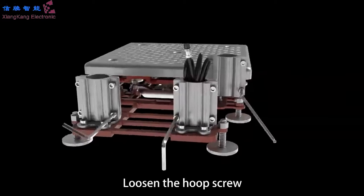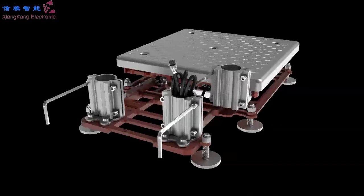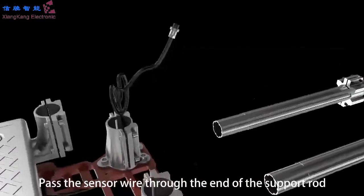Step 2: Install the support rod. Loosen the hoop screw. Pass the sensor wire through the end of the support rod.